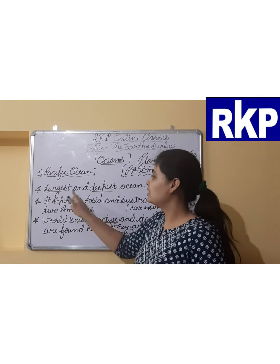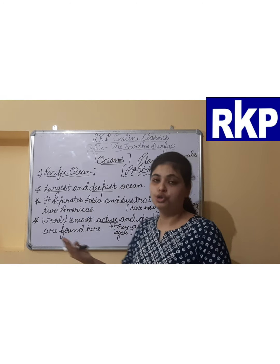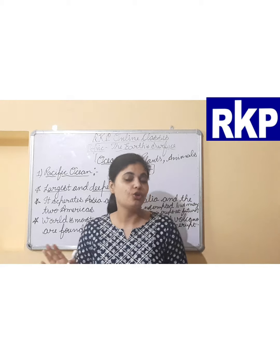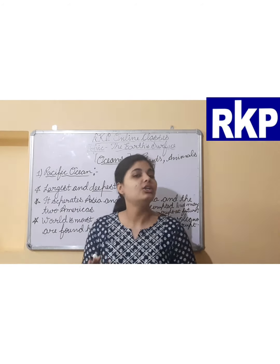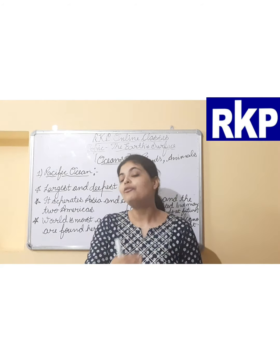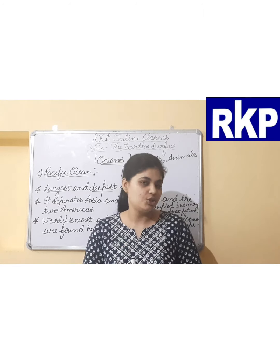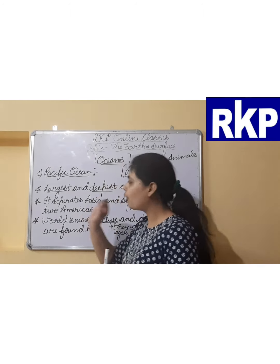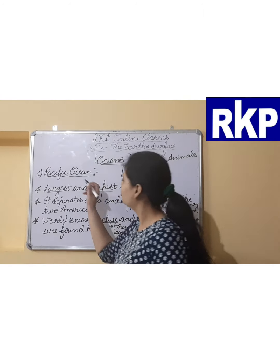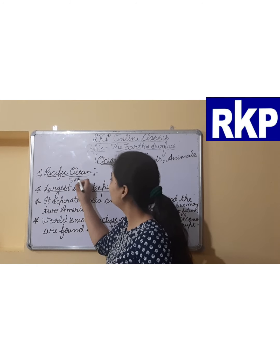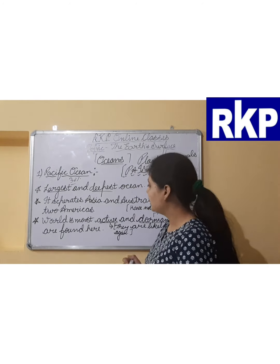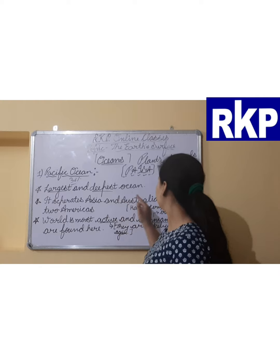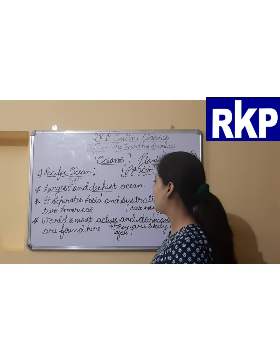So how many oceans are there? There are five different oceans. There is a trick to remember these oceans in descending order from largest to smallest — that is PAISA: Pacific, Atlantic, Indian, Southern, Arctic.